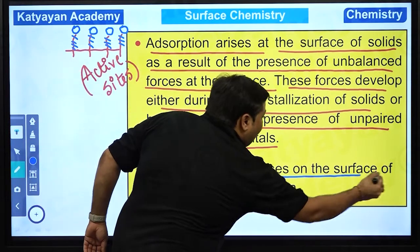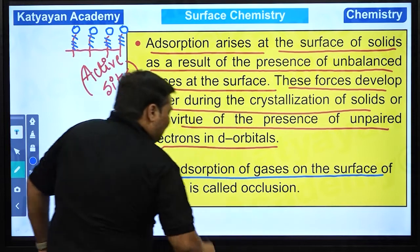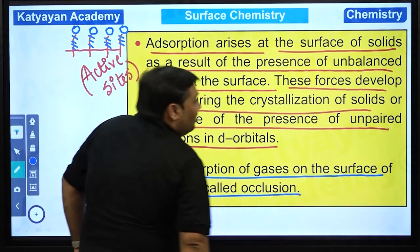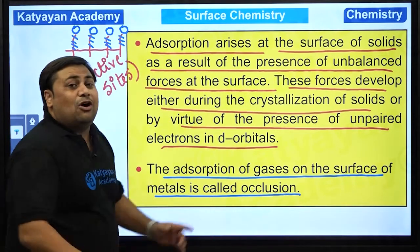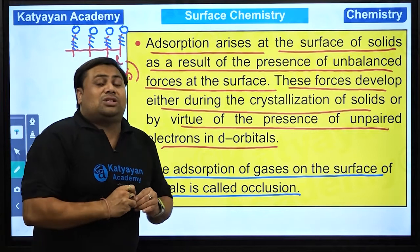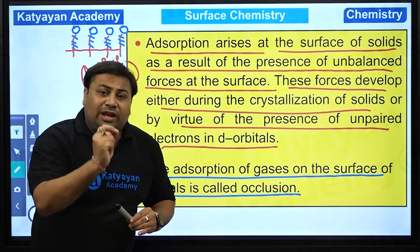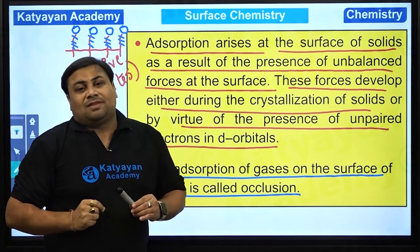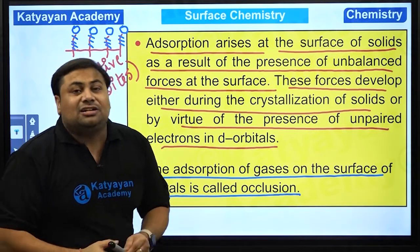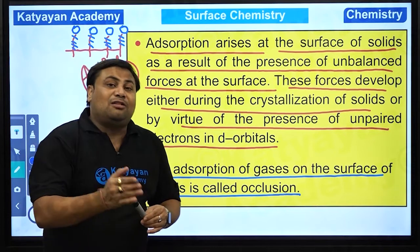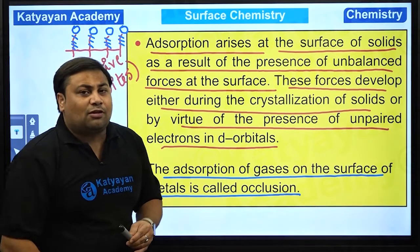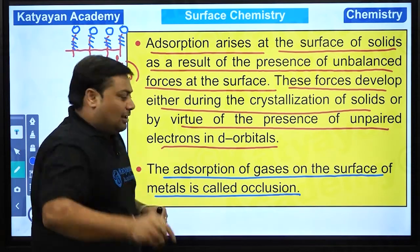The adsorption of gases on the surface of a metal is said to be occlusion. Occlusion is the special term used when adsorption of gases occurs on the surface of a metal.